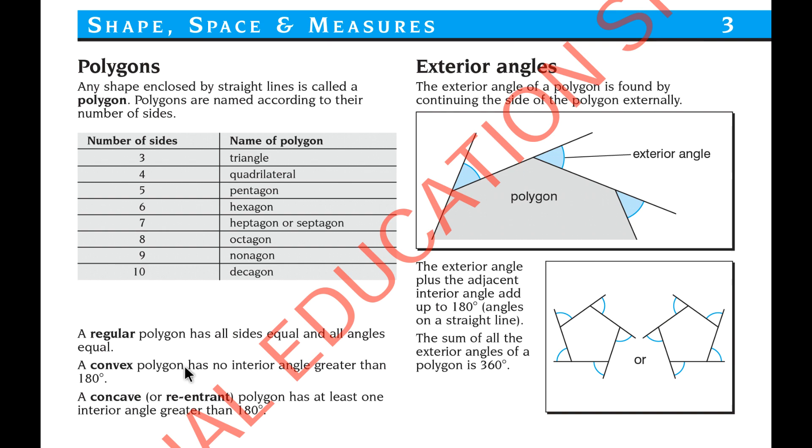A convex polygon has no interior angle greater than 180 degrees. A concave polygon has at least one interior angle greater than 180 degrees. These are for further knowledge.